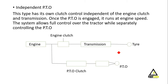The third PTO type is the independent type. This type has its own clutch control independent of the engine clutch and transmission. Once the PTO is engaged, it runs at engine speed. The system allows full control over the tractor while separately controlling the PTO. You have an independent clutch from the engine clutch, which means you can control the tractor movement independently from the PTO. You can control the PTO differently and also control the tractor movement differently — they are two separate systems.